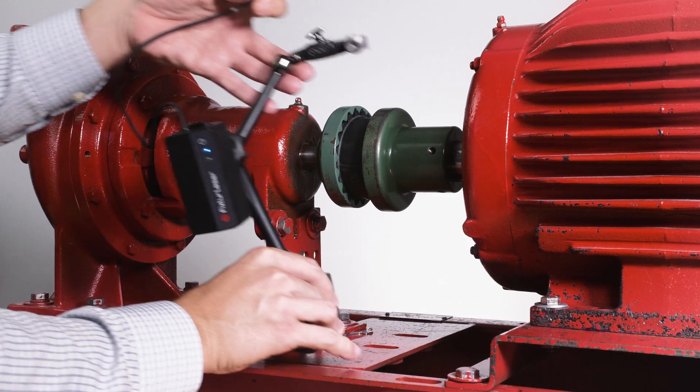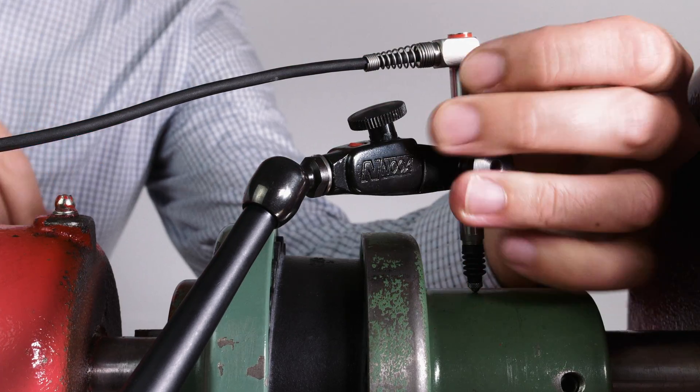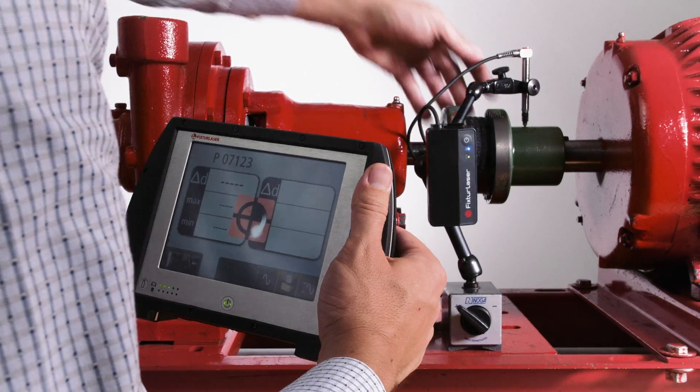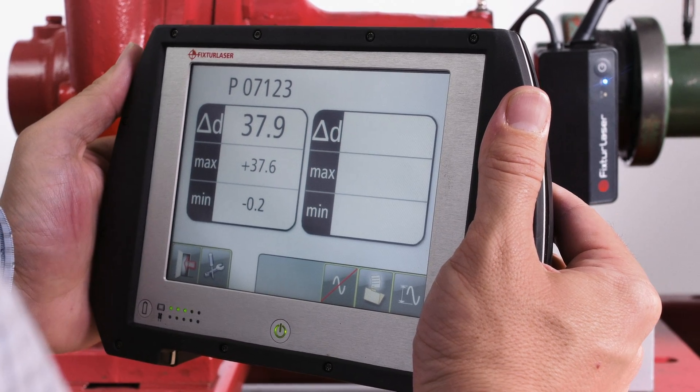In order to measure shaft runout, the probe is mounted on the articulating arm and placed in the respective position. After the press of a button and one complete rotation of the shaft by hand, the NXA will give results.